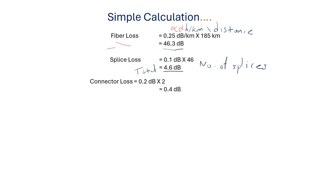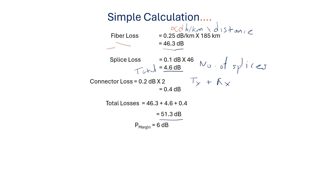Next is connector loss. We require two connectors — one on the transmitter side and one on the receiver side. Each connector loss is 0.2 dB, so total connector loss is 0.4 dB. The total loss — fiber loss plus splice loss plus connector loss — is 51.3 dB. Adding the power margin of 6 dB gives a combined value of 57.3 dB.